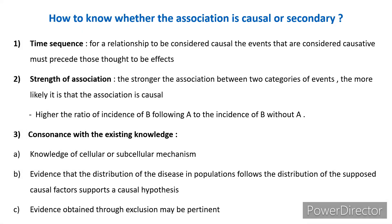Third, consonance with existing knowledge — three parts: first, the causal hypothesis derived through epidemiological studies should have support from existing knowledge of cellular or subcellular mechanisms. Second, evidence that the distribution of disease in populations follows the distribution of the supposed causal factors supports a causal hypothesis. Third, evidence obtained through exclusion may be pertinent: the more extensive efforts you make to explain a non-causal association between two variables and find them all unsuccessful, the more likely a causal association becomes.